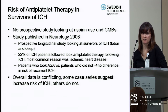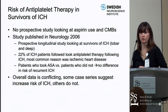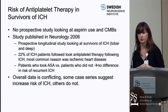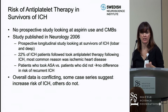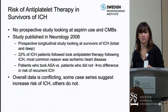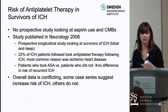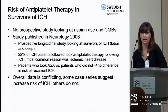One of the biggest conundrums for us as neurologists is what to do with these patients when we find this information. It can be really stressful because we're trying to weigh the risks — we don't want our patient to have another hemorrhage, but if they have something like atrial fibrillation, congestive heart failure, or a history of myocardial infarction, how do we weigh the risk of preventing an ischemic vascular event against the risk of a recurrent or primary ICH?